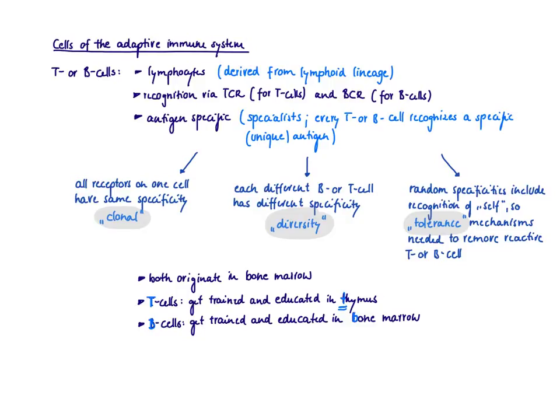A couple of other characteristics of the T and B cell, they all originate in the bone marrow, and the T cells get trained and educated in the thymus. That's where the T comes from, T from thymus. And the B cells get trained and educated in the bone marrow. B for bone marrow.